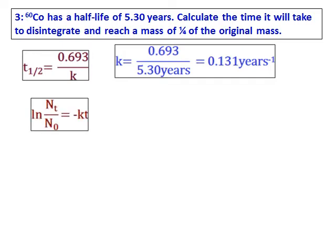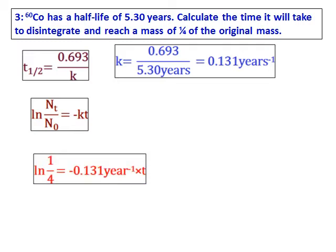Once you get the value of k, we need to use the equation ln(Nt/N0) equals minus kt, where the value of Nt over N0 is 1 over 4 as given in the question. Substitute all the values, put in the values of k, and get the value of t.